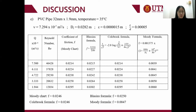Last is the PVC pipe with dimensions 32 mm × 1.9 mm. From the Moody chart, the coefficient of friction is 0.0246, the same as the Colebrook formula. The Blasius formula gives f = 0.0250, and the Moody formula gives 0.0047.